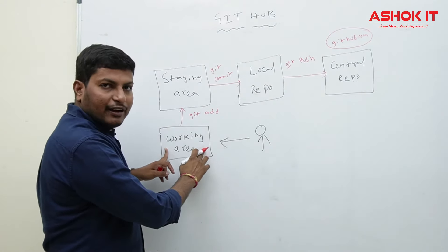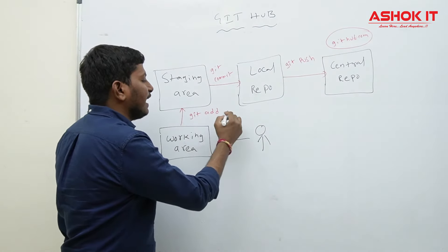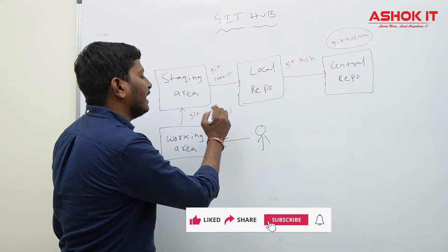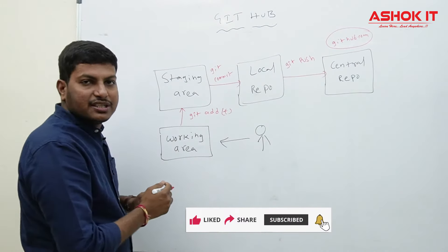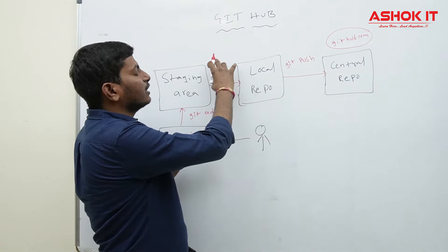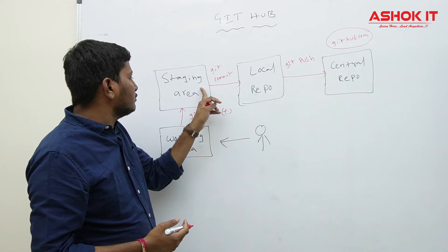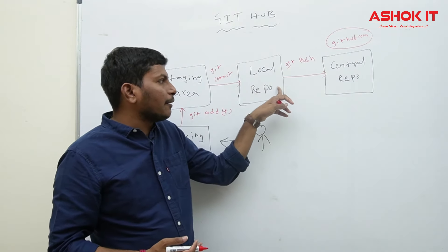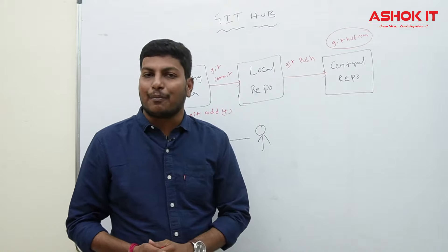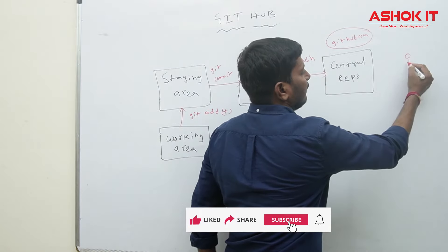Whenever you modify or newly create a file, first add it to the staging area using git add filename. If you want to add all modified and created files, use git add dot — it will add all files to the staging area. Then execute git commit with a message. The files move from staging area to local repository. Then execute git push — files go from local repository to central repository.